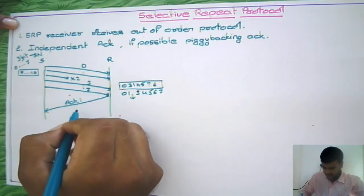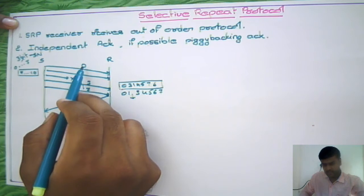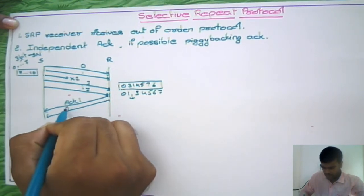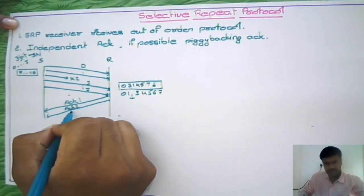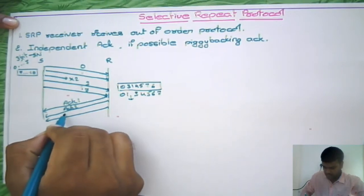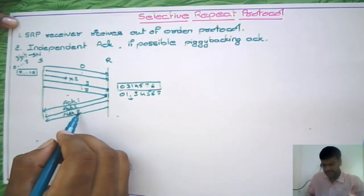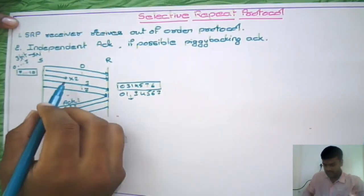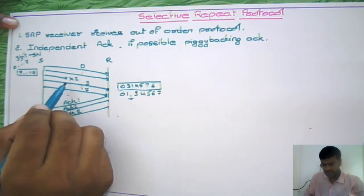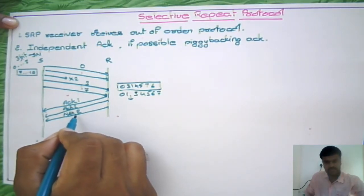The receiver gives acknowledgement for each packet independently. Acknowledgement 1 is for packet 0, and acknowledgement 2 is for packet 1. Now it is going to give a negative acknowledgement for sequence number 2, because the packet with sequence number 2 was sent earlier but was not received at the destination, or it may have been corrupted. In both cases, it gives negative acknowledgement 2.